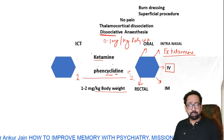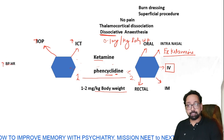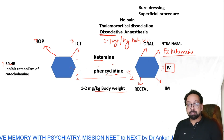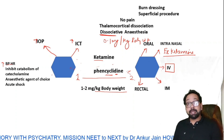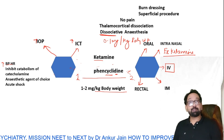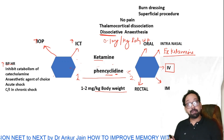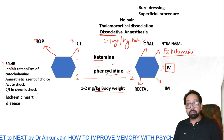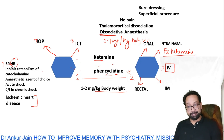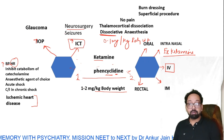Ketamine increases all pressures of the body — intraocular pressure, heart rate, and blood pressure. The mechanism is that it inhibits the catabolism of catecholamines, so heart rate and BP increase, making it the anesthetic of choice in acute shock. However, in chronic shock, all catecholamines are depleted, so it actually depresses cardiac muscle and is contraindicated. It is also contraindicated in ischemic heart disease — since high heart rate increases cardiac oxygen demand — and in glaucoma and neurosurgery due to increased intracranial and intraocular pressure.